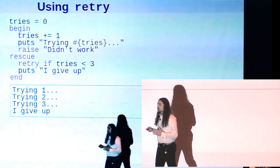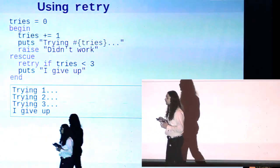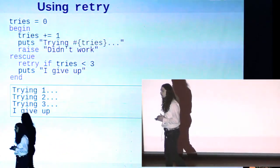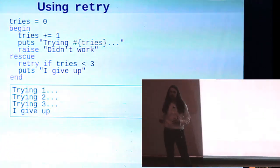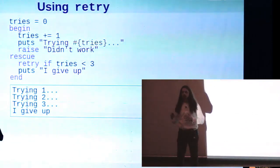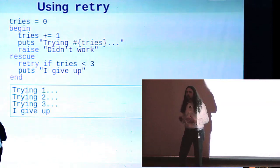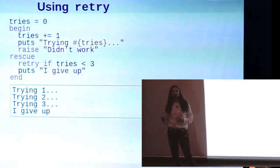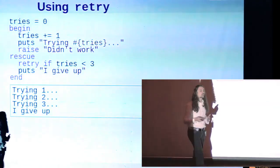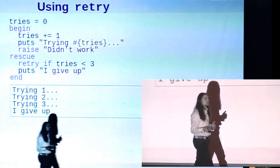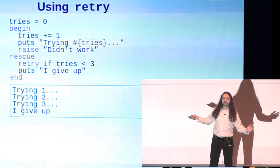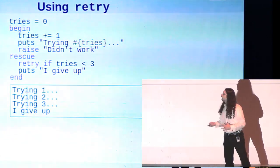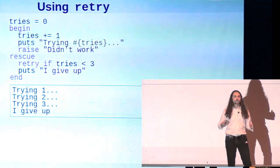Here's a version of that using retry. So here we're defining a tries counter, and then we're trying something out. It raises an exception, and in the rescue, we check to see if we've exceeded our tries counter. If not, we say retry, and what retry does is it sends execution right back to the start of that begin block. And we keep doing this until we hit our max, and then we say forget it.